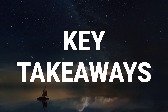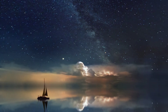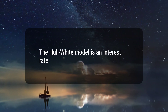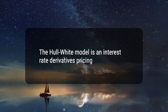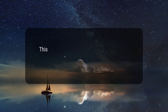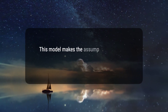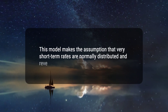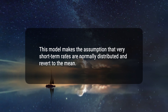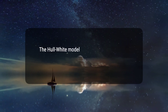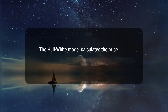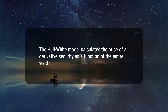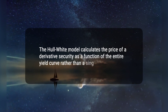Here are three key takeaways. First, the Hull-White model is an interest rate derivatives pricing model. Second, this model makes the assumption that very short-term rates are normally distributed and revert to the mean. Third, the Hull-White model calculates the price of a derivative security as a function of the entire yield curve rather than a single rate.